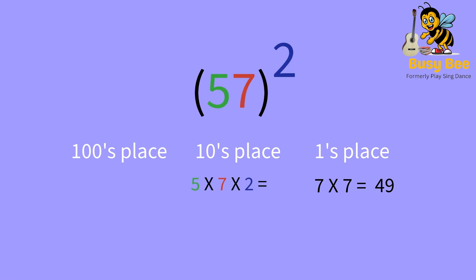The second step is to take the tens place number, multiply it with the ones place number, and then again multiply it with 2. Here, it is 5 times 7 times 2, which is 70.